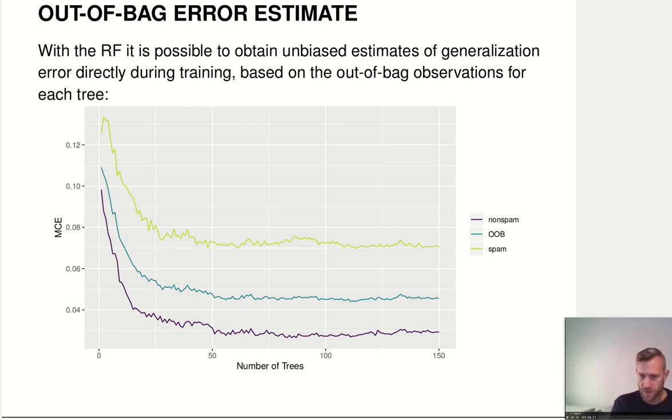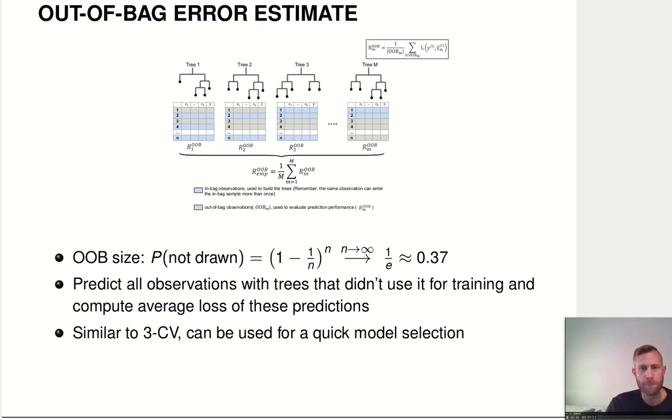If we do that for all ensemble members and average them together by looking at how each ensemble member performs on the out-of-bootstrap, out-of-bag (OOB) data that weren't used to train it, we can get a better estimate of the misclassification error or whatever loss function we're using. We can basically do cross-validation already during training and get a good estimate of the likely generalization performance.